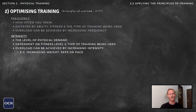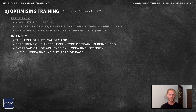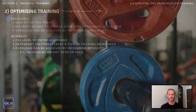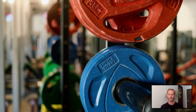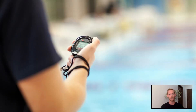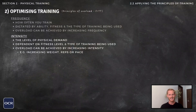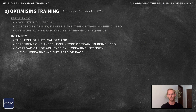The I stands for intensity, which refers to the level of physical demand. Progression can be achieved by gradually working harder over time — for example, by increasing the resistance, reps, or pace, or reducing rest periods between sets. When setting training intensity, the fitness level of the performer and type of training being used should both be taken into account.